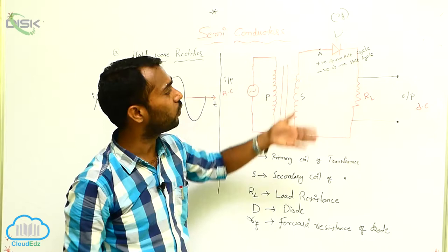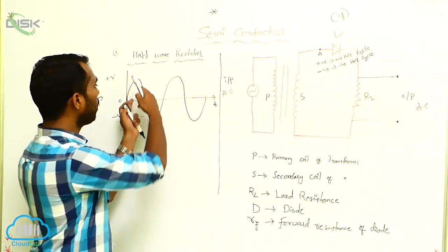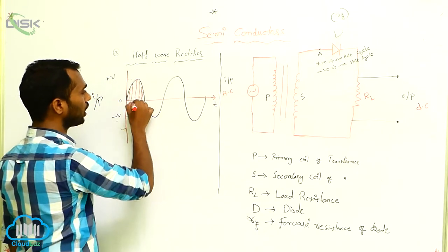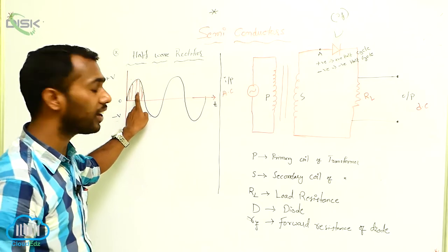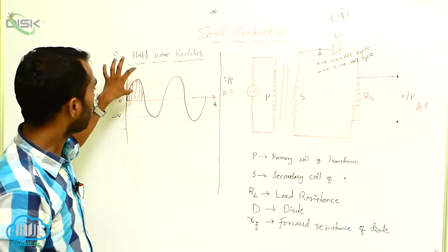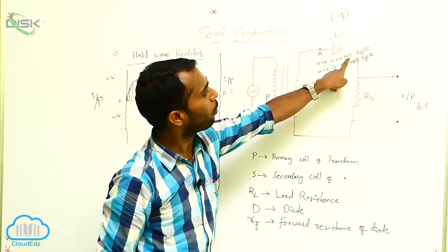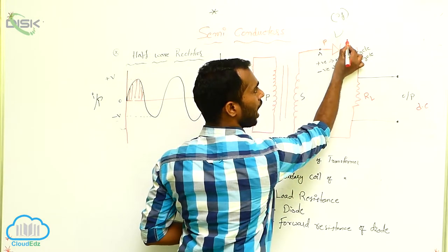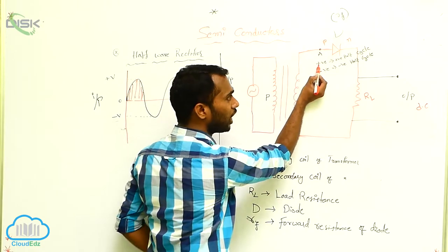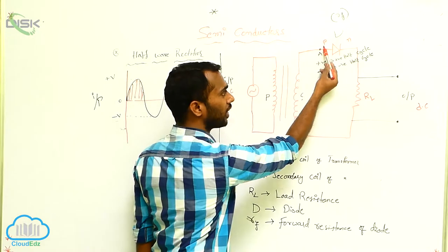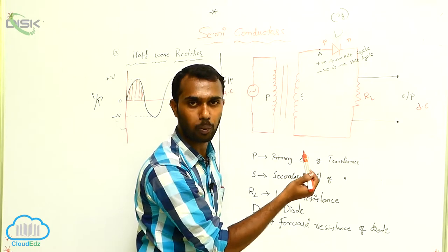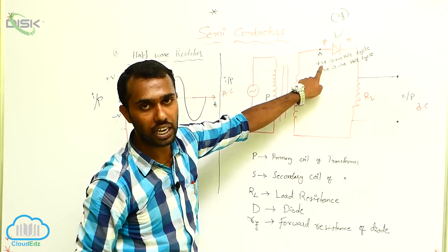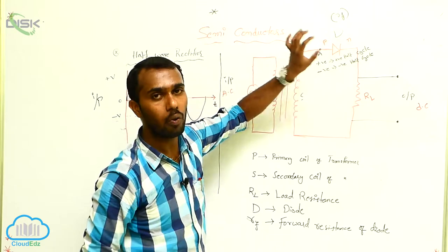If A point behaves in such a way, I am sending the positive half cycle towards the diode. For positive half cycle, A point behaves like a positive. It is the P part of the diode; it is the N part of the diode. P part is connected to positive. Forward bias or reverse bias? Forward bias — P side is connected to positive, both are positive, forward bias.